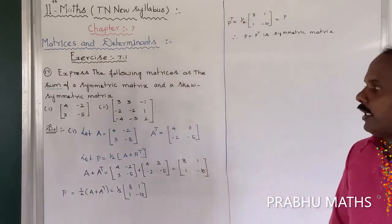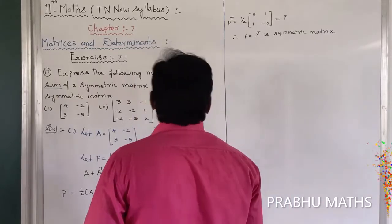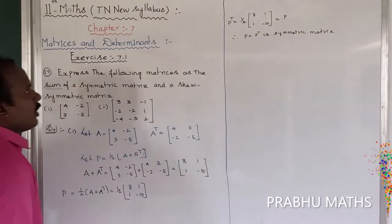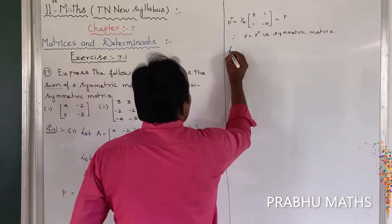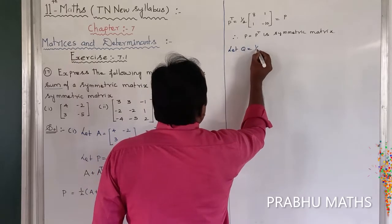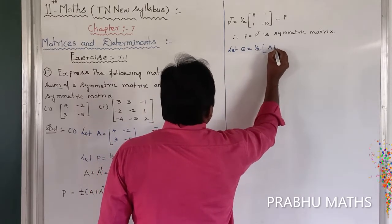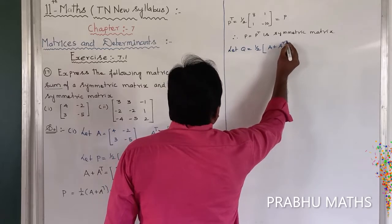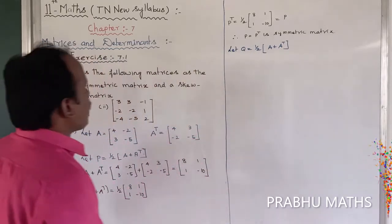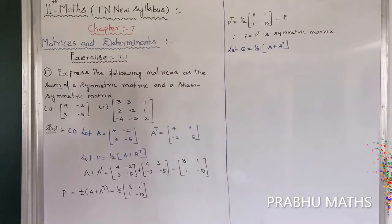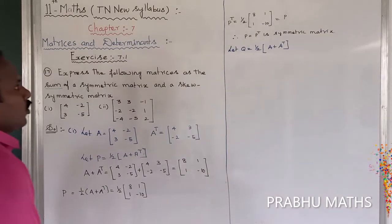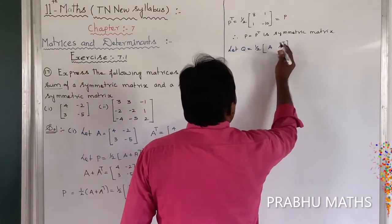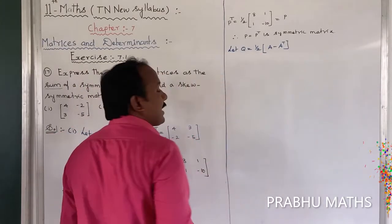Next, find the value of the second term — the skew-symmetric part. Let us consider the value of Q. Q is equal to 1/2 into (A minus A transpose). Now Q is equal to minus Q transpose — that is the skew-symmetric condition.